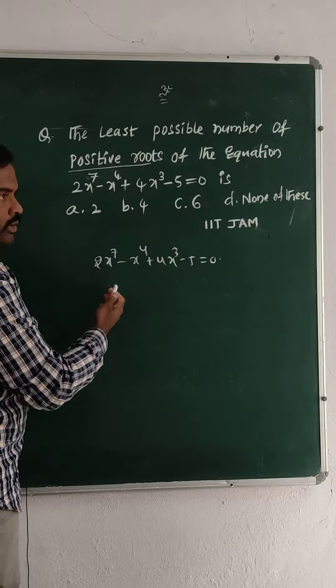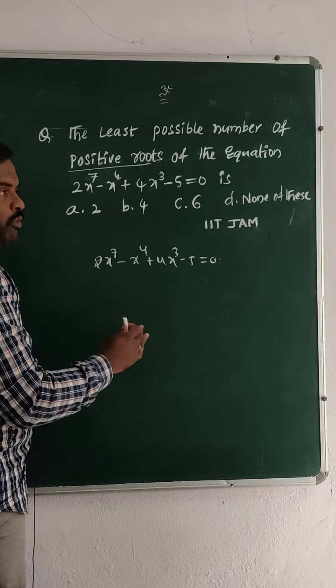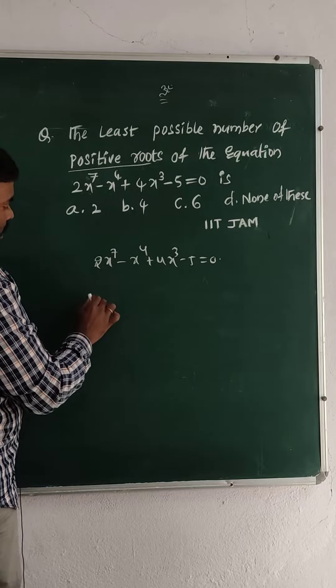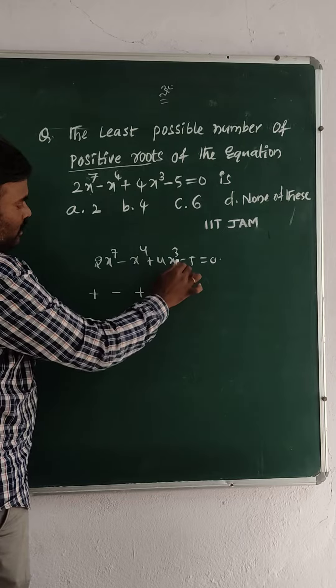There is a shortcut friends. Just write down the signs here, how many times it is changed? That gives the number of positive roots. Now here this sign is plus, here it is minus, this is plus and it is minus.